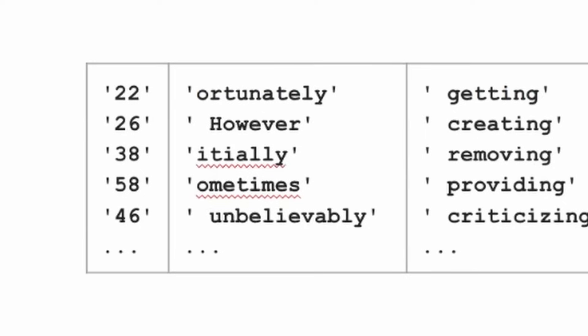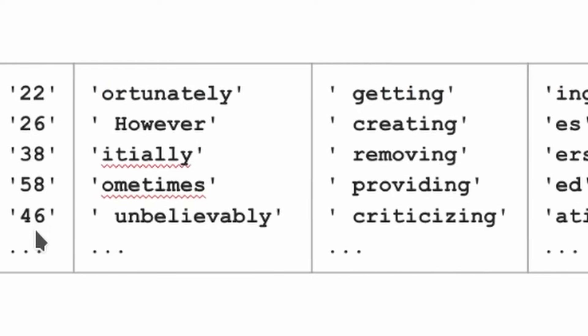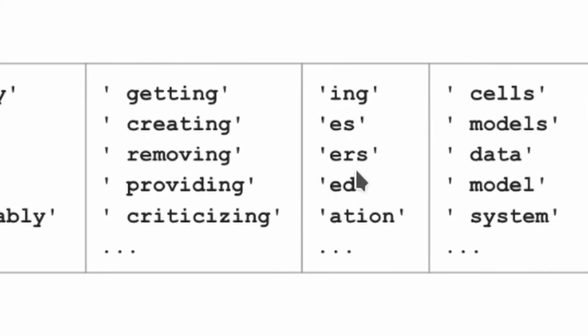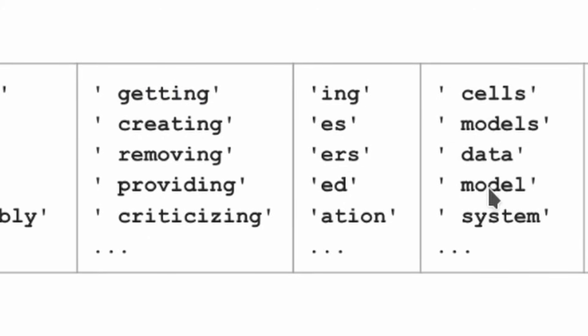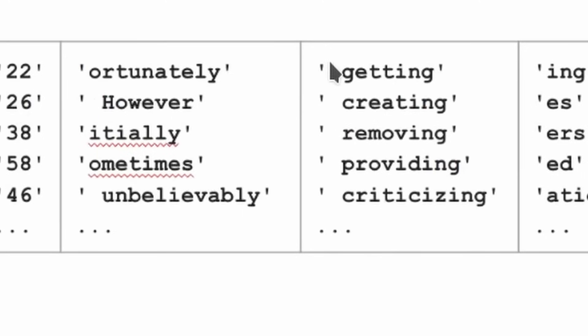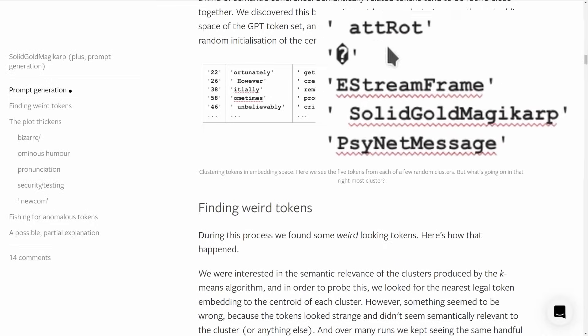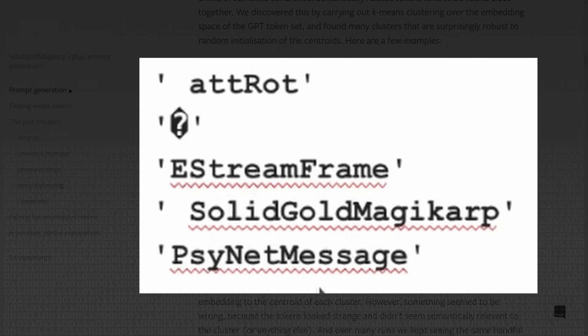They ran k-means clustering and found a bunch of clusters, many of which make sense: one cluster is all different two-digit numbers; another has 'cells, models, data, model, system' — engineering-type things; another has 'getting, creating, removing, providing, criticizing' — words ending in '-ing.' But then they also found a cluster containing things like 'at rot,' 'e-stream frame,' 'solid gold Magikarp,' and 'signet message.' Why are these even tokens?